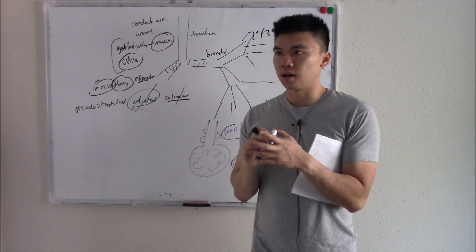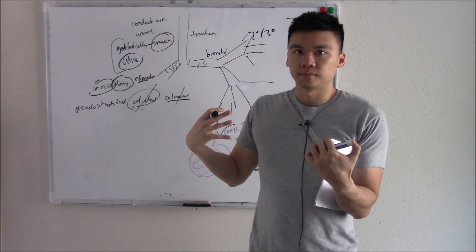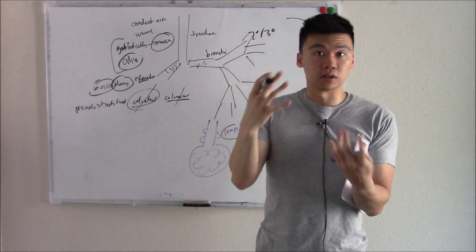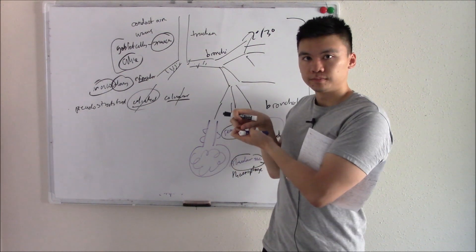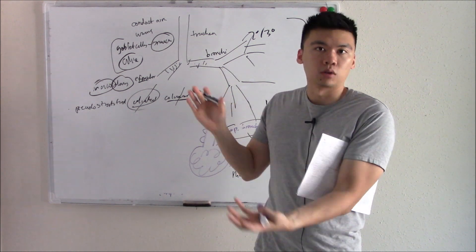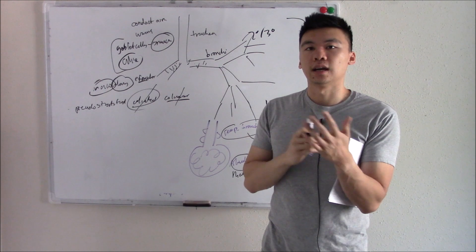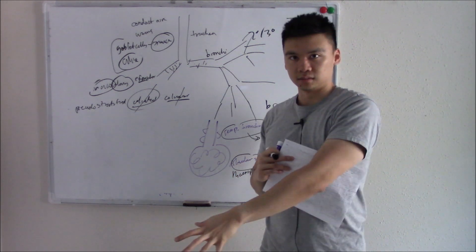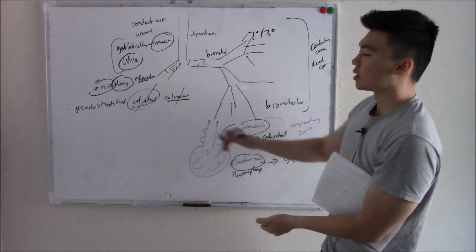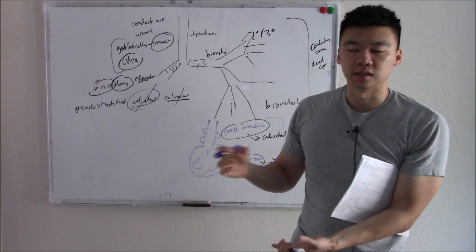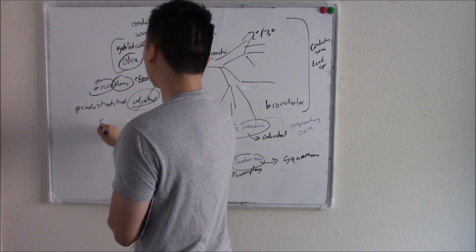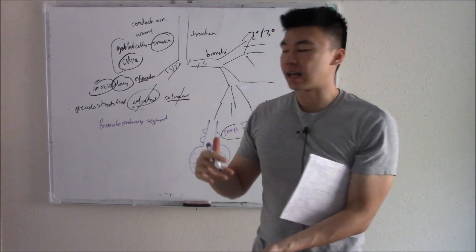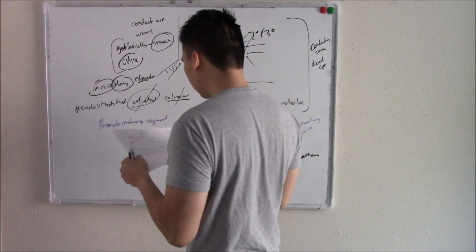Your lungs are cool in that portions work independently of each other — it's not just one giant lung. Your lobes are independent, and even segments within your lobes are independent. You can surgically remove a segment of your right upper lobe and it will have no effect on your right middle lobe or right lower lobe. It's kind of like an apartment complex — each unit has its own resources. These independent segments are called bronchopulmonary segments.